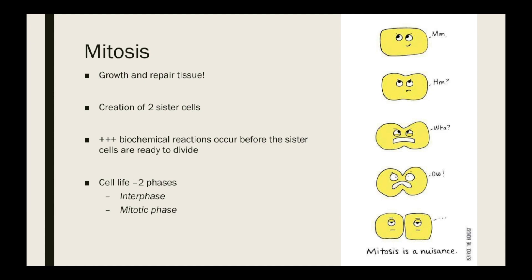There's the creation of two sister cells during mitosis, and there are tons of biochemical reactions that occur before the two sister cells become two sister cells. So before that, one cell is actually ready to divide. The cell life is divided into two phases: interphase and the mitotic phase, which we'll break down more in a minute.